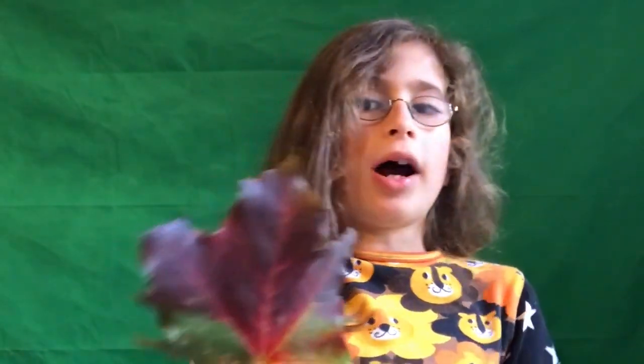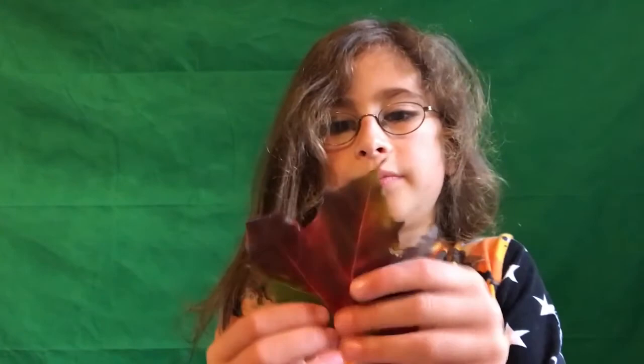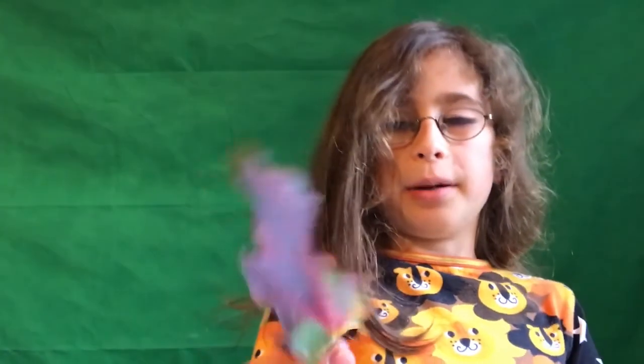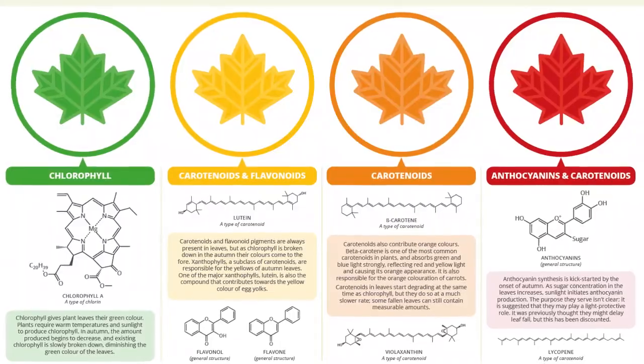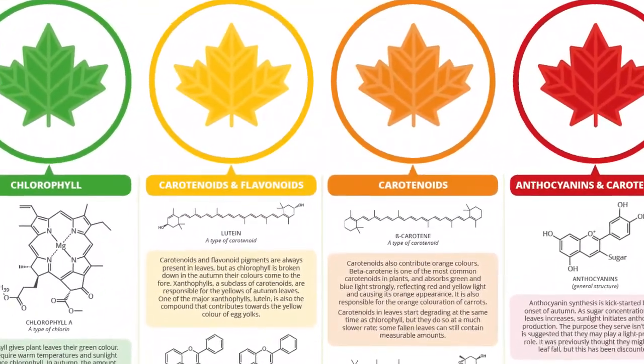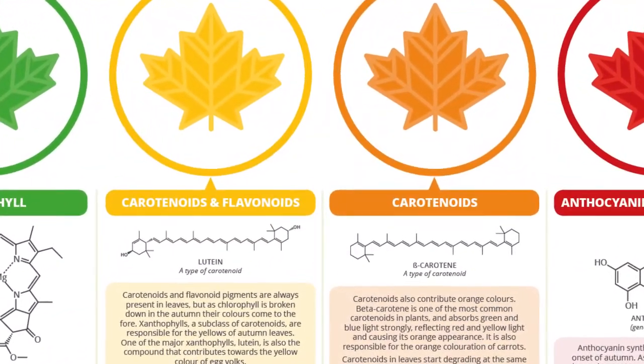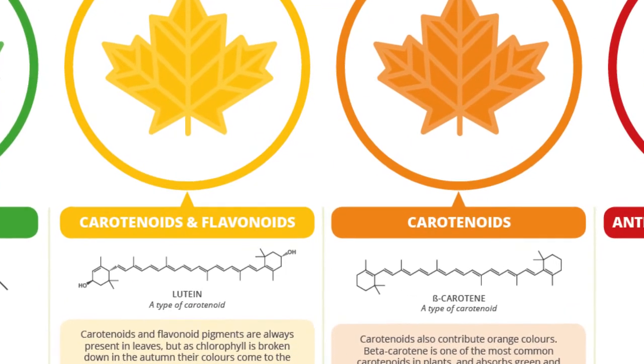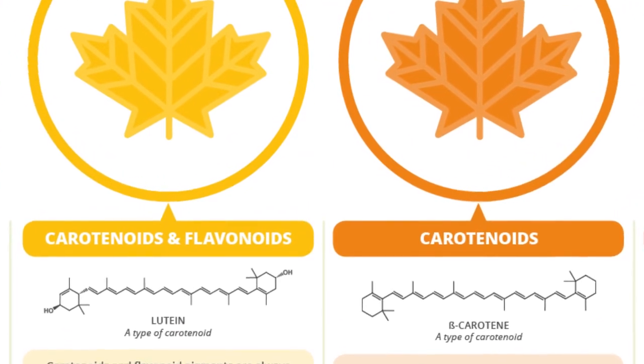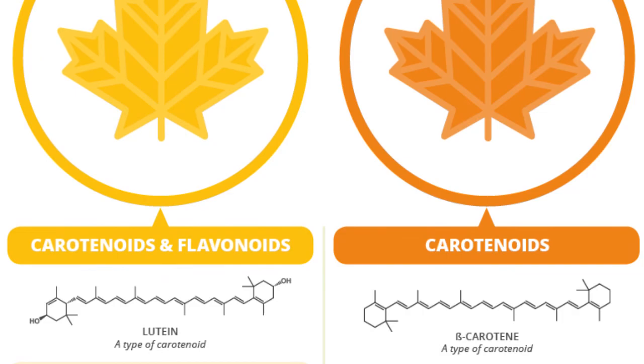The other compounds decay slower than chlorophyll because they're always in the leaf, but chlorophyll overruns them. As the chlorophyll dies, they break out, and because they absorb blue, green, and a bit of purple light, they turn out orangey-red — because that's the only light they don't absorb. Some carotenoids make carrots orange and some make egg yolks yellow.